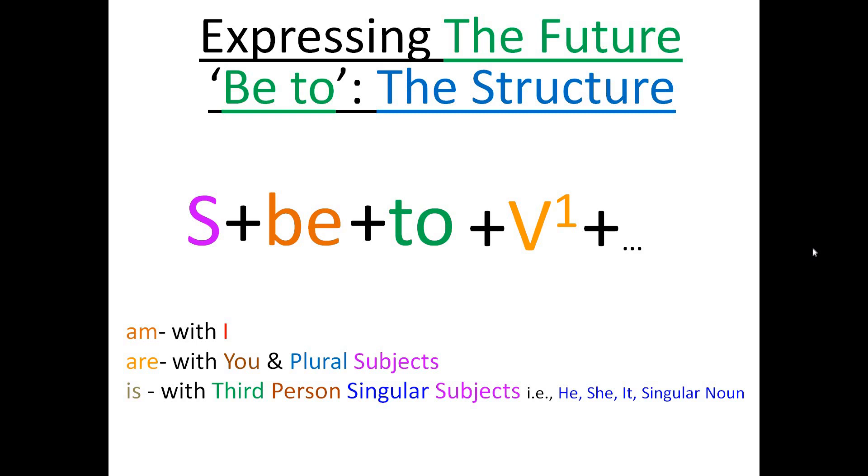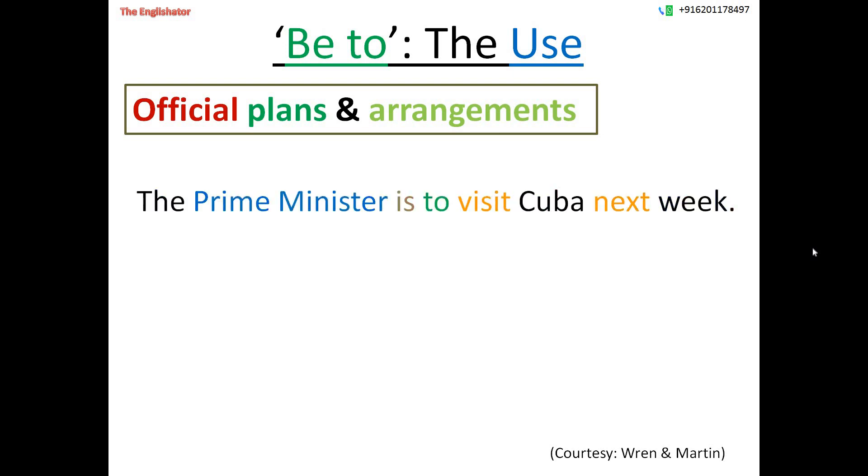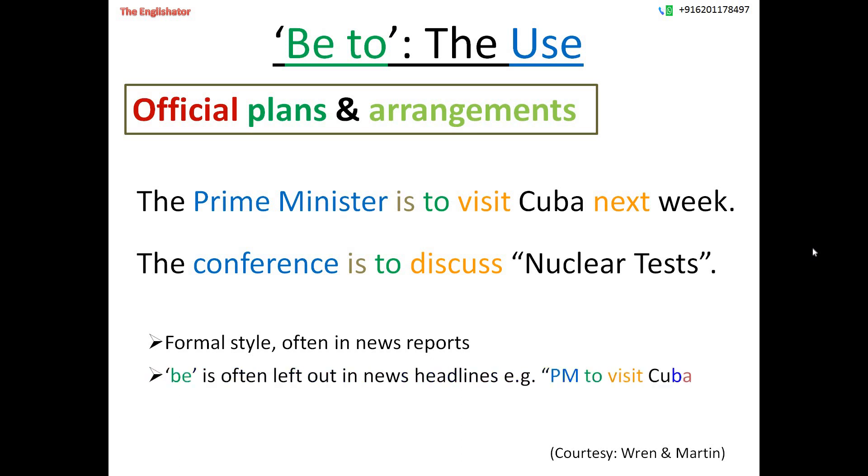For example, the prime minister is to visit London next week. So the chief use of this phrase be to is in expressing certain official plans and arrangements for some actions which are going to happen in the future. For example, the prime minister is to visit Cuba next week, and the conference is to discuss nuclear test. But remember, this be to is used in the formal style of communication, especially in news reports, to express certain future actions or events. And that too, sometimes you will find that even be to is omitted from the sentence, especially in news headlines.